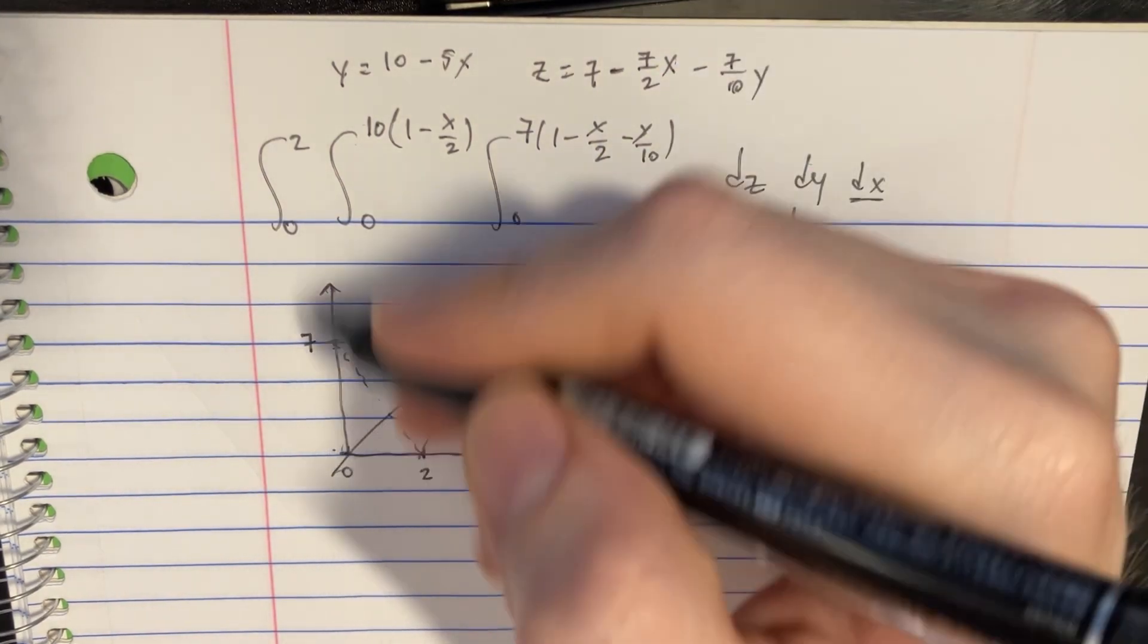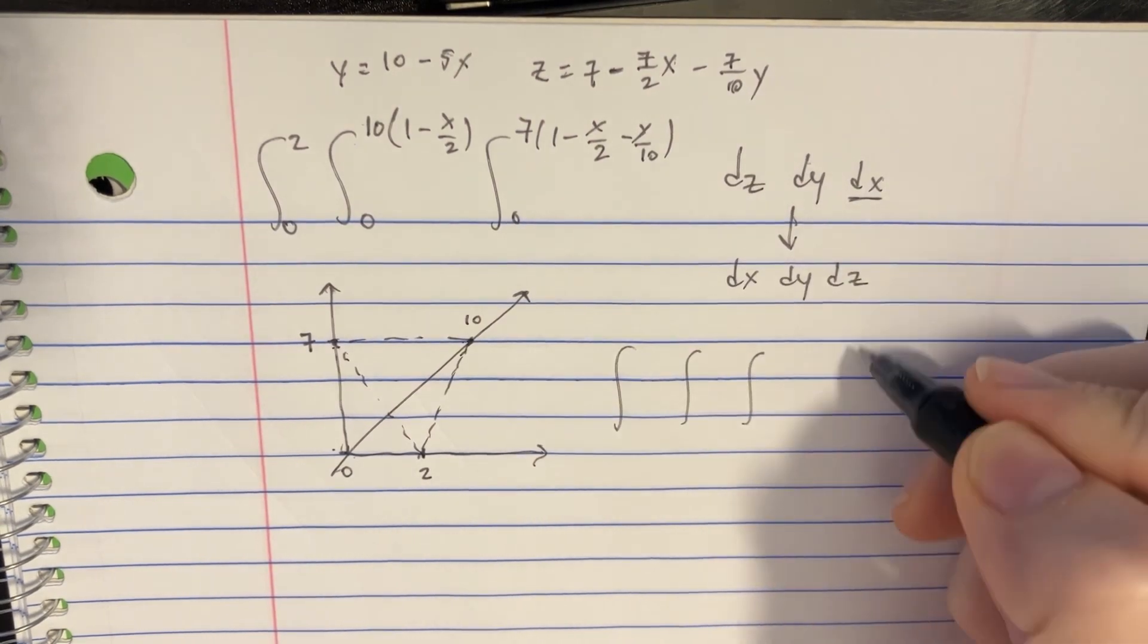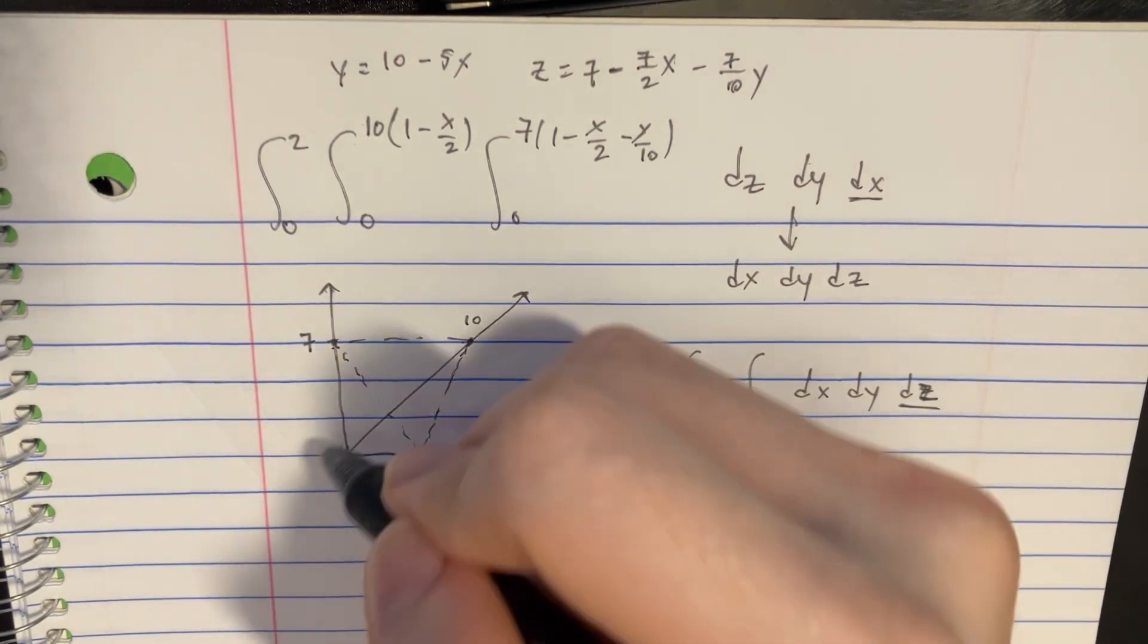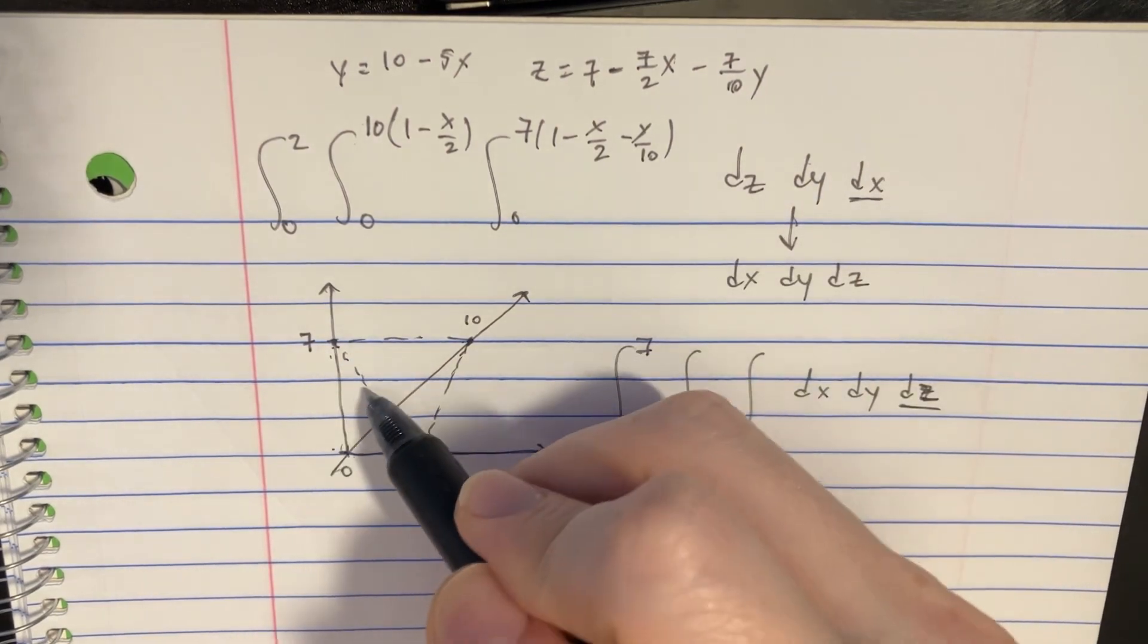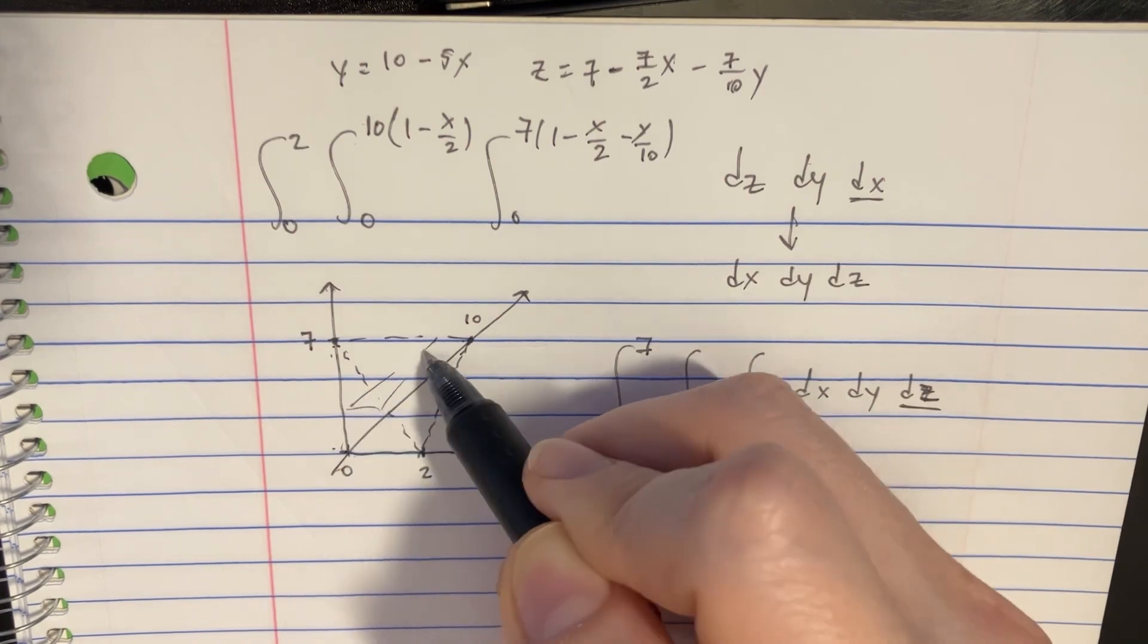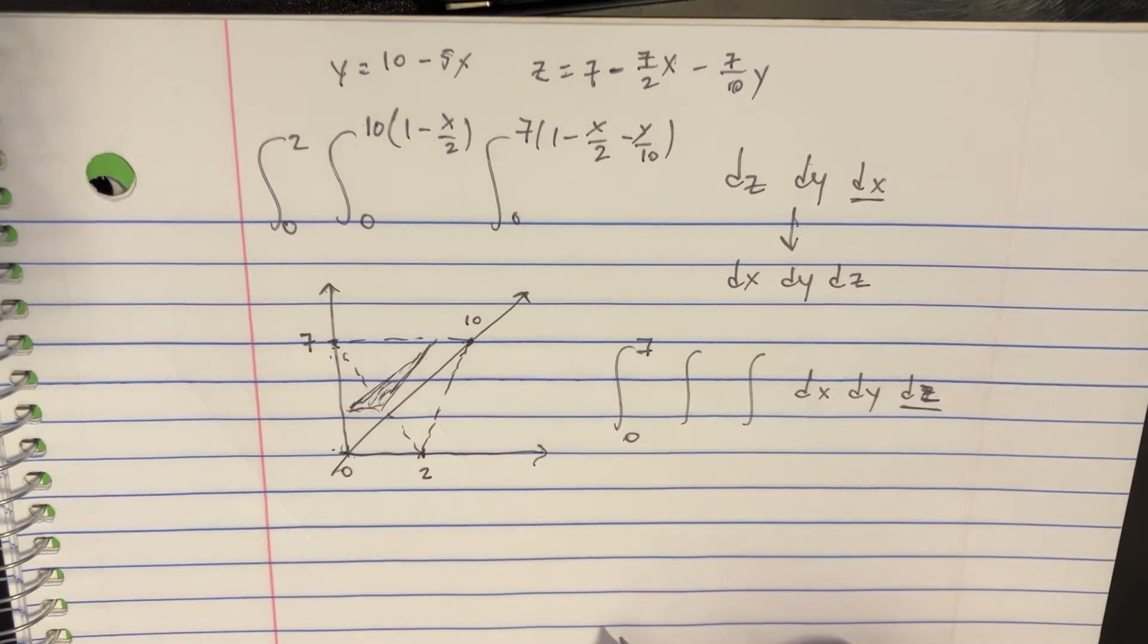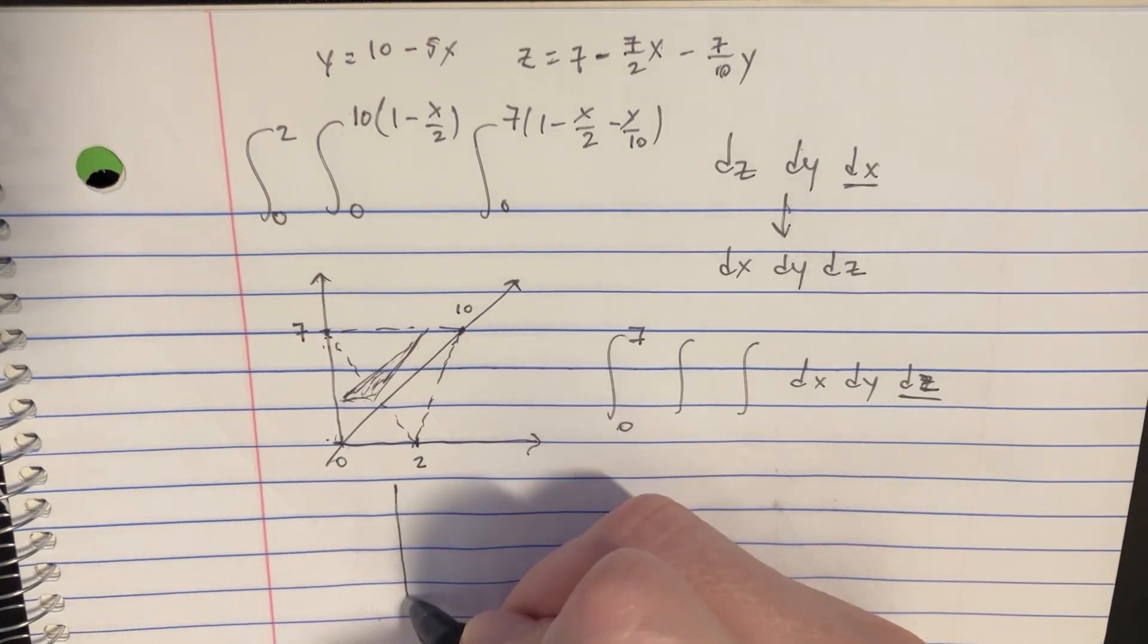So we want to integrate this with this new orientation here. In order to do that, we notice that dz is at the end, so we're just going to go 0 to 7 there. And now we want to try to describe, if we were going to integrate all little triangles that are going through here all the way up to the top, how can we describe those triangles with another double integral?